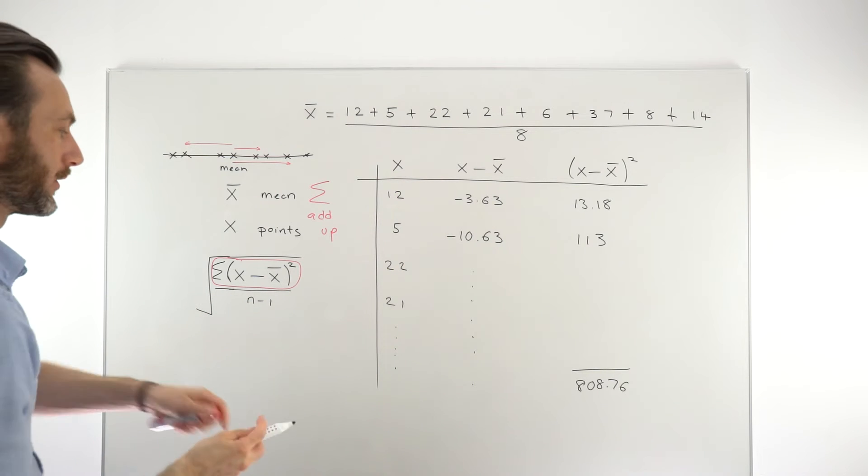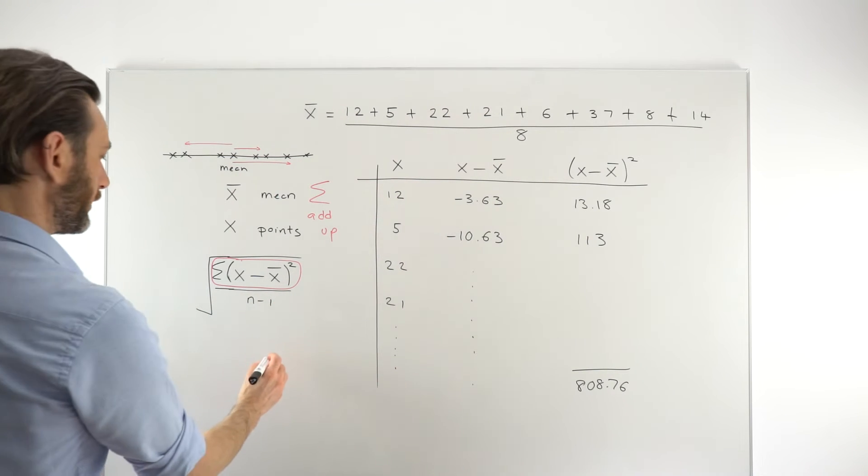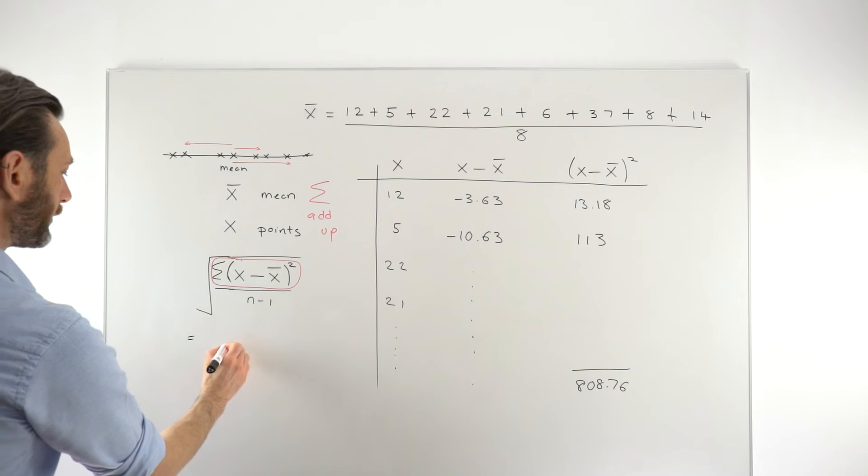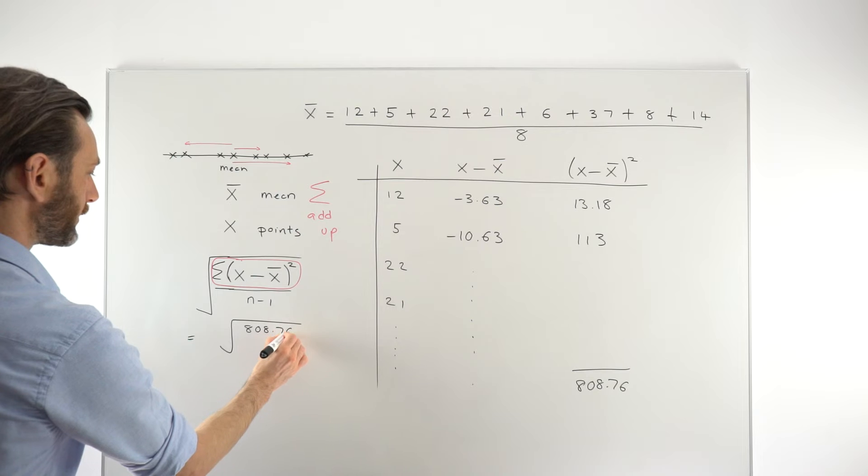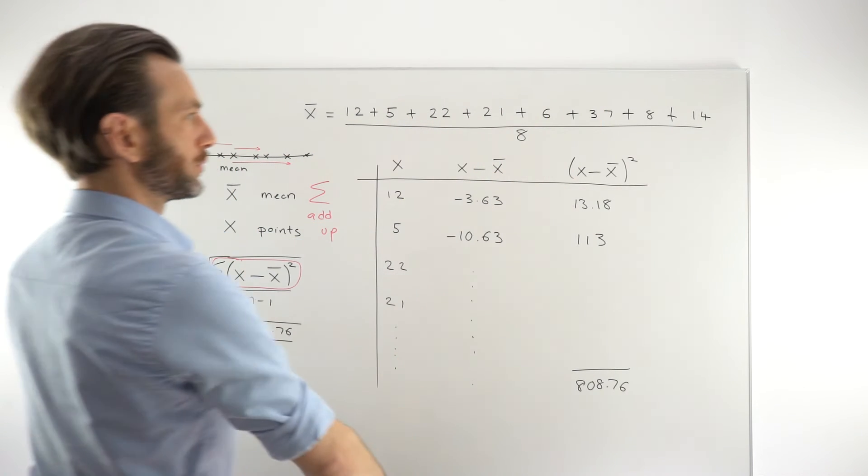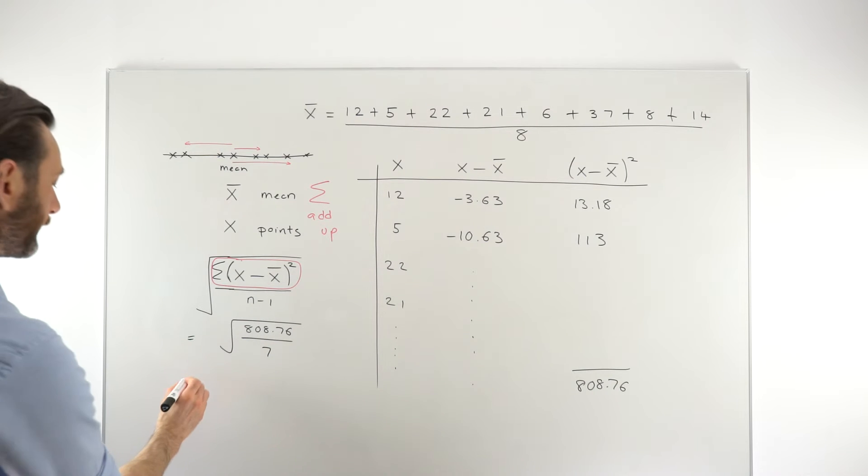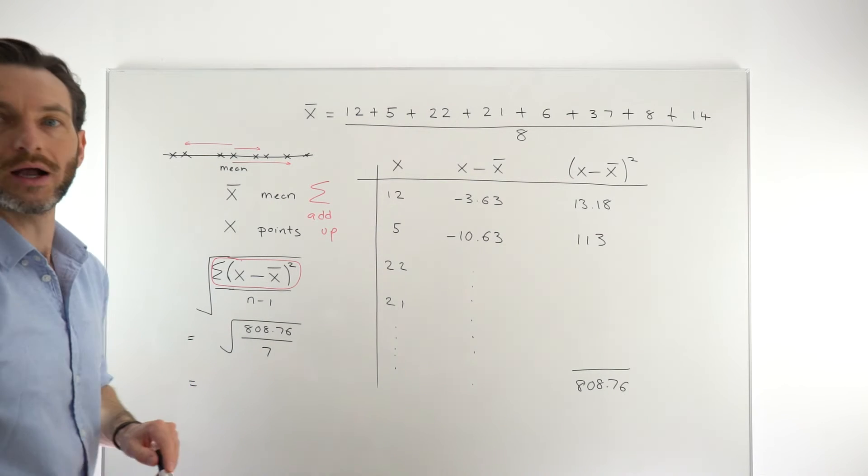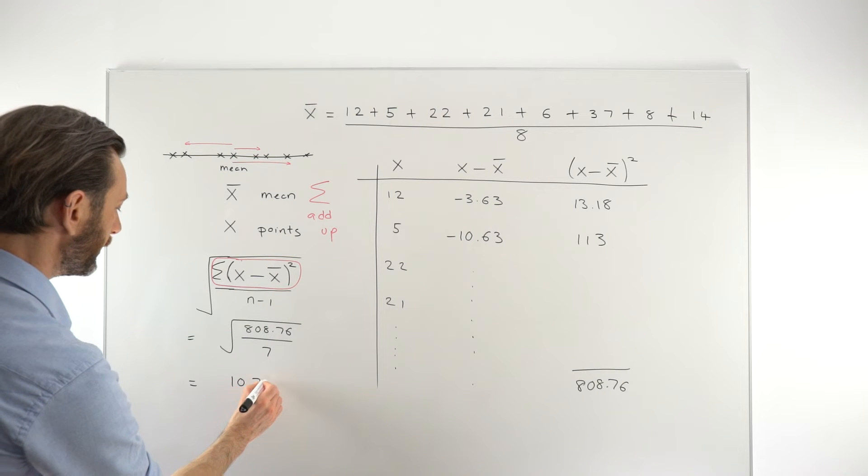So we're almost done at this point. All we need to do is plug that number into our formula. So that's just going to become the square root of 808.76 divided by n, remember, was the number of numbers, which was 8, n minus 1 is therefore 7, and we get that. And then we just process that on the calculator, and that comes out to be 10.75.